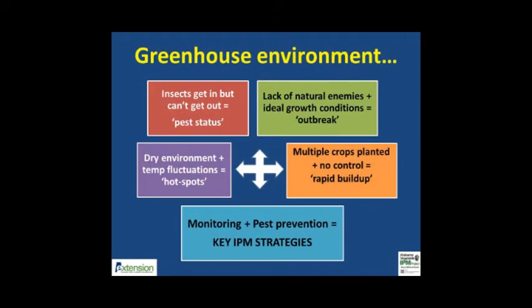New producers should fully understand the challenges of greenhouse vegetable production systems. Insect pests can accidentally enter the greenhouse and establish quickly in the absence of natural enemies. Hot and dry areas of a greenhouse can also be conducive for insect hot spots. Multiple crops in a greenhouse can be a problem due to the migration of pests between crops. Monitoring and prevention tactics are critical for greenhouse crop production.